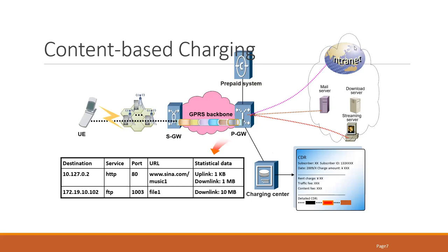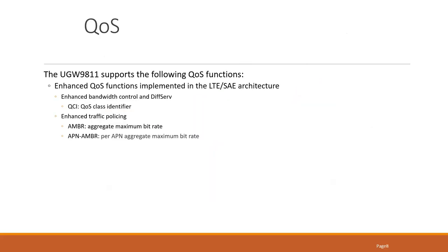Content-based charging is based on the content a user is consuming. You can charge a user based on a certain URL, IP address, port, or based on uplink and downlink. You can define different tariffs based on that. We will discuss this later when we look into how DPI, integration, and rules are created. The term used in packet core for quality of service is QCI — Quality of Service Class Identifier.